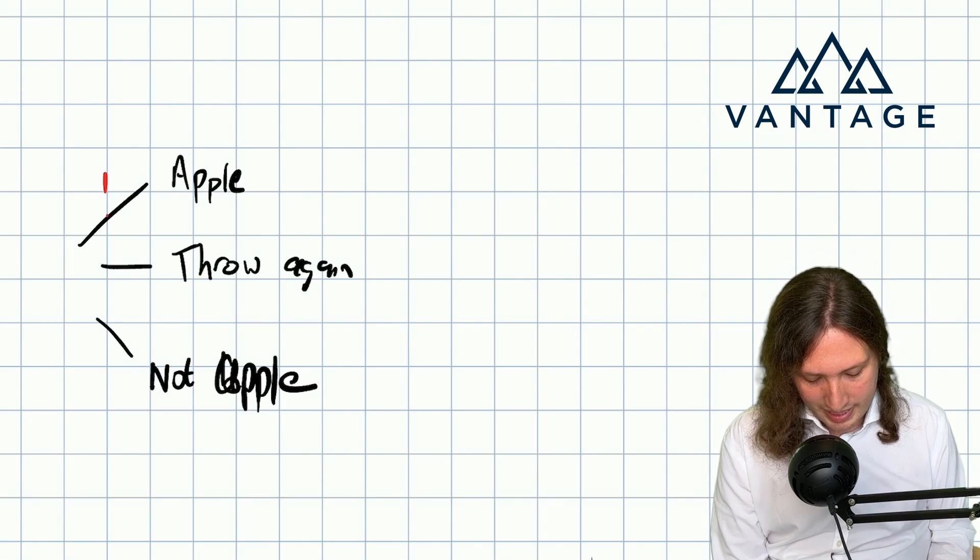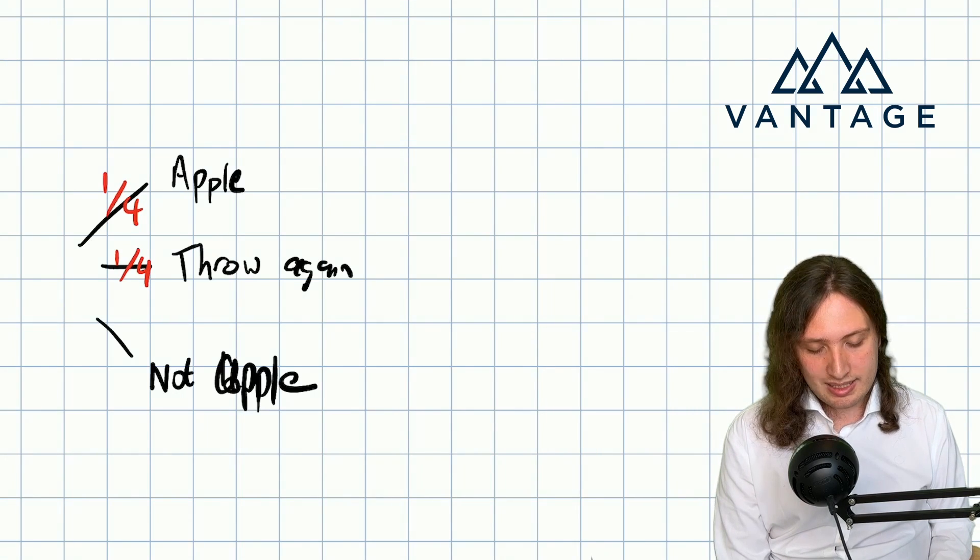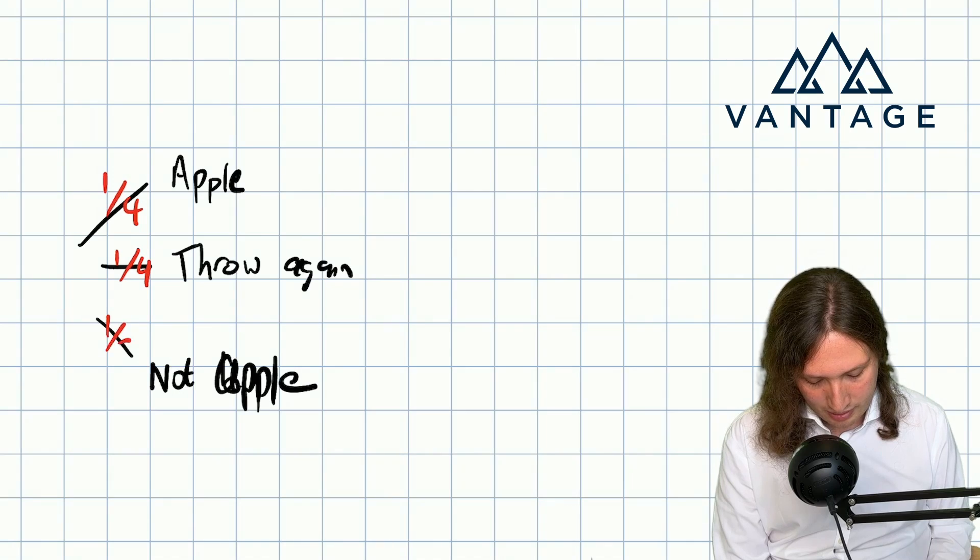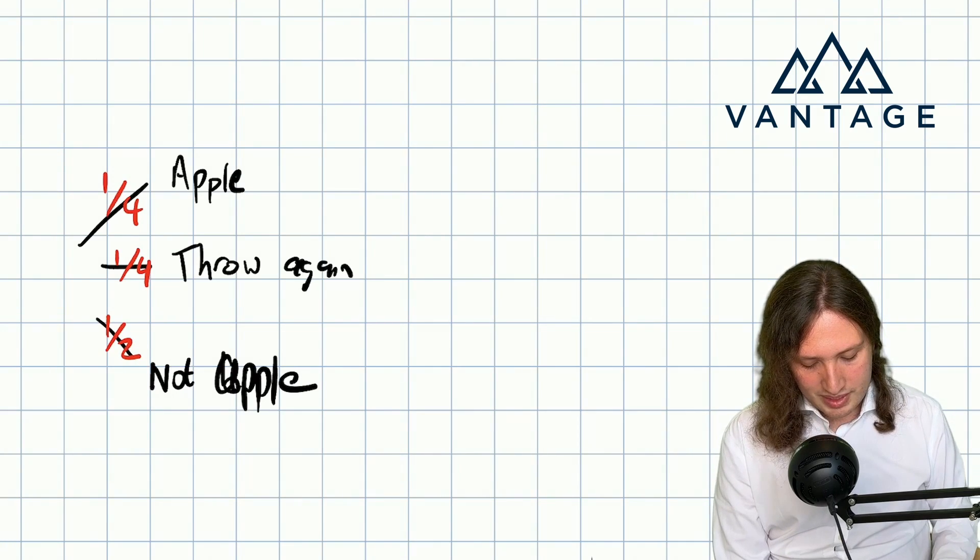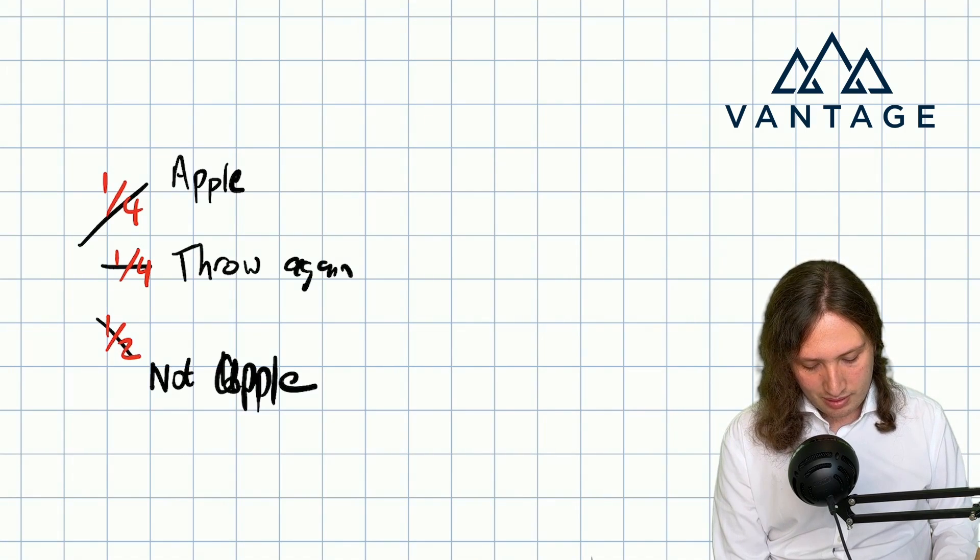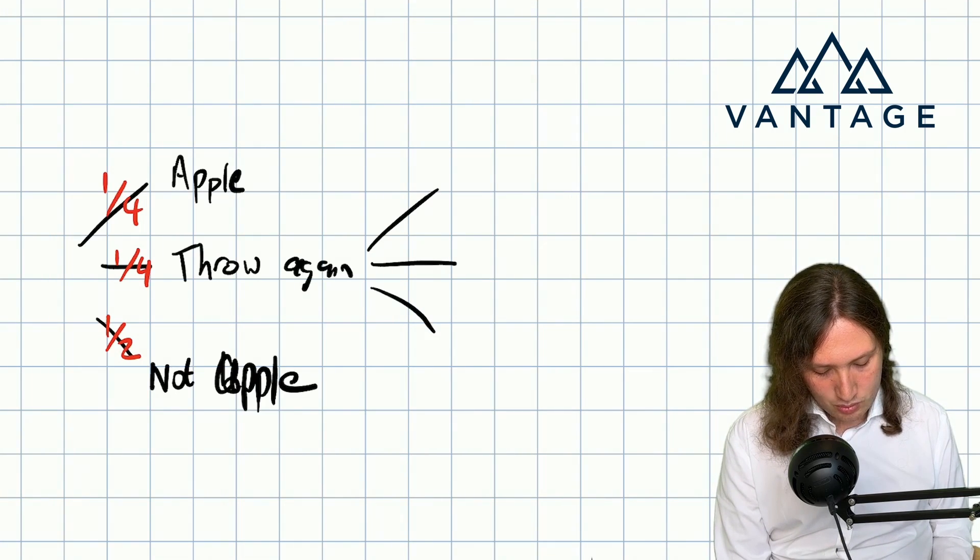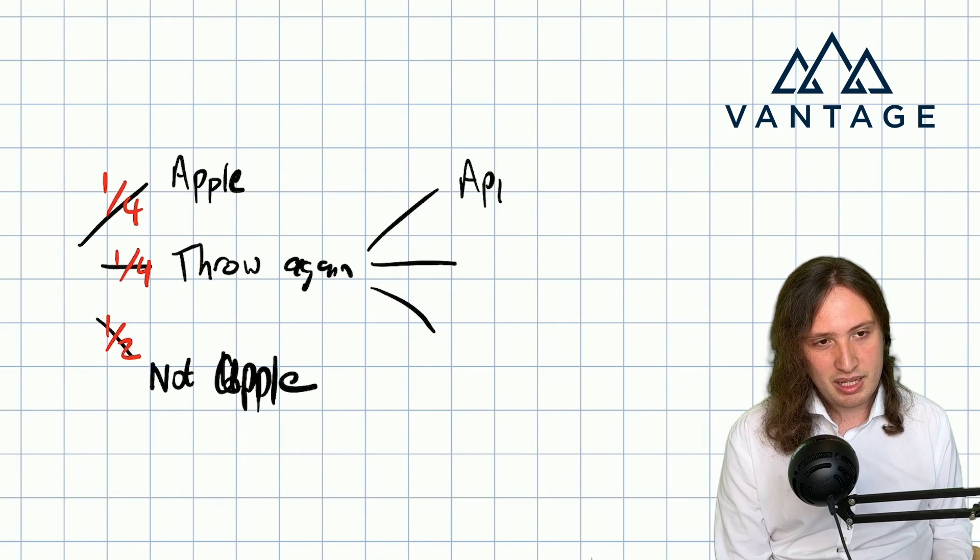So apple happened with heads heads, that's a quarter. Throw again happened with tails tails, that's a quarter. And not apple could be heads tails or tails heads, that's going to be a half. So obviously in the apple outcome, great game over, we've won. In the not apple outcome, we've lost. In throw again, we now have to branch again. And already at this point, we might start to get a bit nervous.